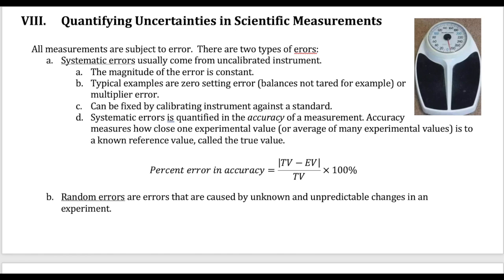Hi, everyone. We're going to continue in this chapter reviewing some of the concepts that you learned in your introductory chemistry class. Here we're going to talk about how we quantify uncertainties in measurements. As discussed in the previous video, there are different types of precision associated with the instruments you're using, and the different levels of precision are going to introduce some type of error to your measurements.